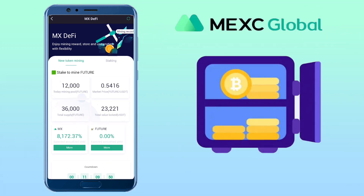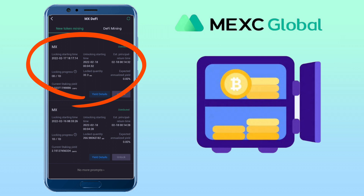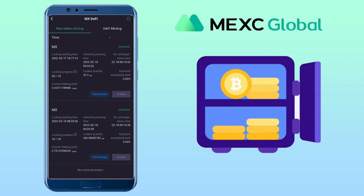To check your mining history, tap on mining records. Here, you will see the details of the mining pools you have participated in, how much tokens you have mined, and the status — whether it's distributed or locking. If the status is distributed, that means it's done and the mined tokens are sent to your wallet.